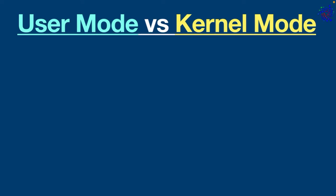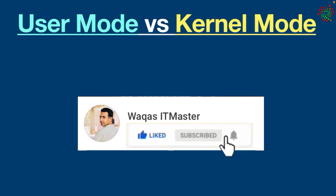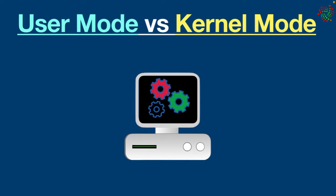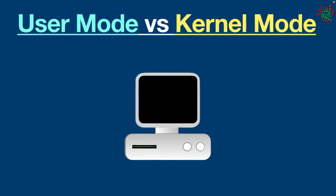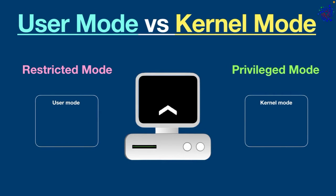Welcome back to another video. Today we are going to see the difference between user mode and kernel mode. User mode and kernel mode are two different modes in which modern operating systems can work and execute certain programs. The main difference is that user mode is the restricted mode in which applications run, and kernel mode is the privileged mode the computer enters when accessing hardware resources.